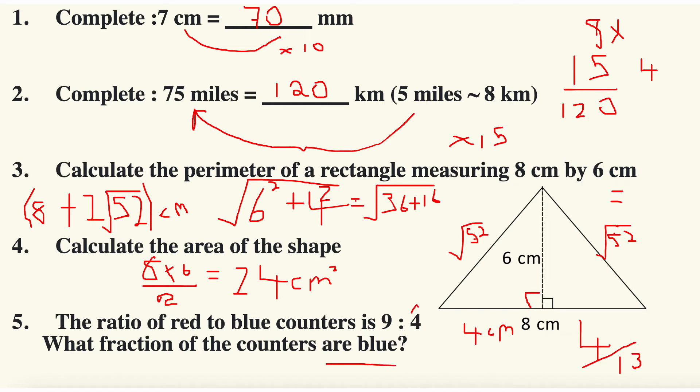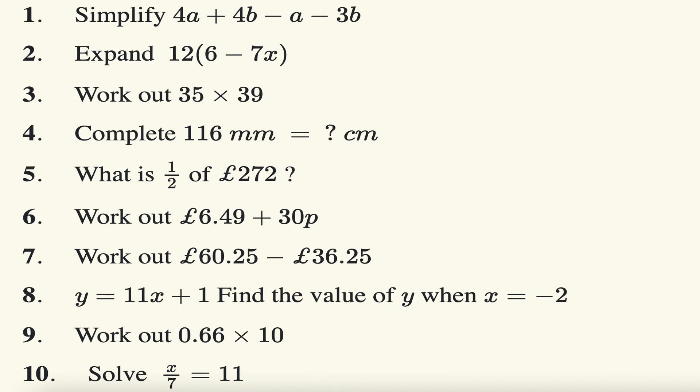Right guys, we are now looking at a different set of questions, now predominantly aimed for the foundation tier, but again it might be appropriate for the higher tier as well. This is question number one: simplify 4a plus 4b minus a minus 3b. We're collecting like terms: 4a takeaway a is 3a, and 4b take away 3b is just equal to plus 1b or plus b.